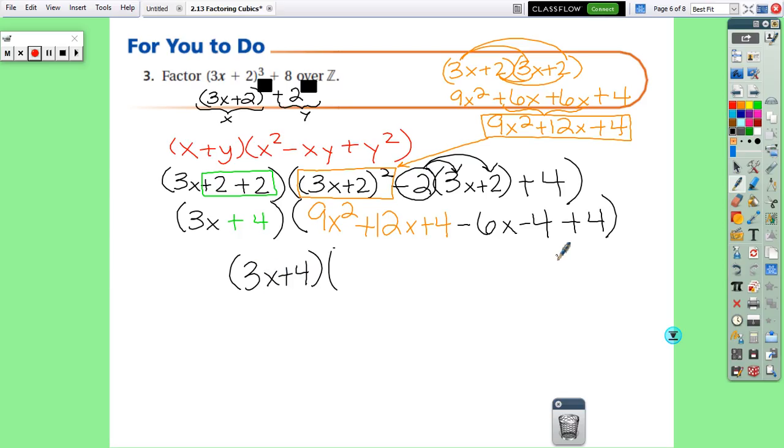The part that's inside this parentheses has to get simplified. So there's only a 9x². So that part is just going to stay the same. Here we have 12x - 6x. So that's going to give us plus 6x.